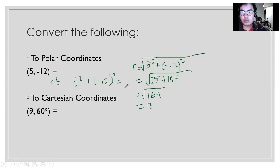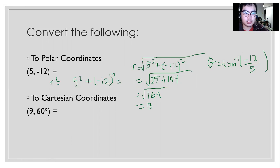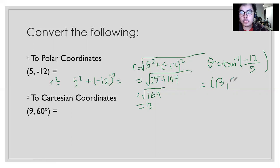So now we have R. To find theta, we're going to divide Y by X, then apply the inverse tangent to the quotient. The angular measure we get is 292 degrees. Why 292? It's because the coordinates lie in the fourth quadrant. So that is the approximate value of theta.